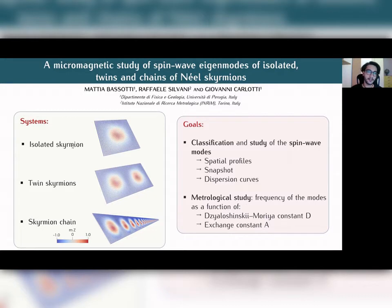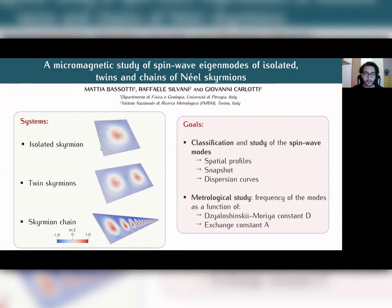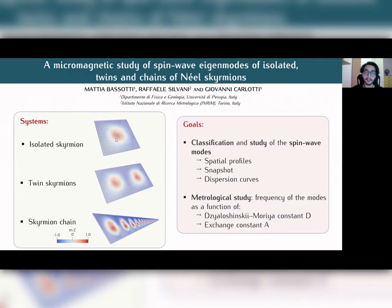The three systems are: the isolated skyrmion, the twin skyrmion — a couple of interacting skyrmions — and a skyrmion chain made up of 71 units. The skyrmion is a topologically protected spin structure stabilized in thin films, in this case by the Dzyaloshinskii-Moriya interaction of interfacial type.